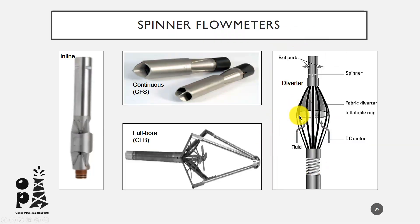The fourth and last type of spinner flow meter is the diverter or basket flow meter. The diverter flow meter concentrates the flow towards a relatively small spinner. While they are highly efficient at low flow rates, they aren't sufficiently rugged to withstand logging passes and are primarily designed for stationary measurements. The tool shape often affects the flow regime.